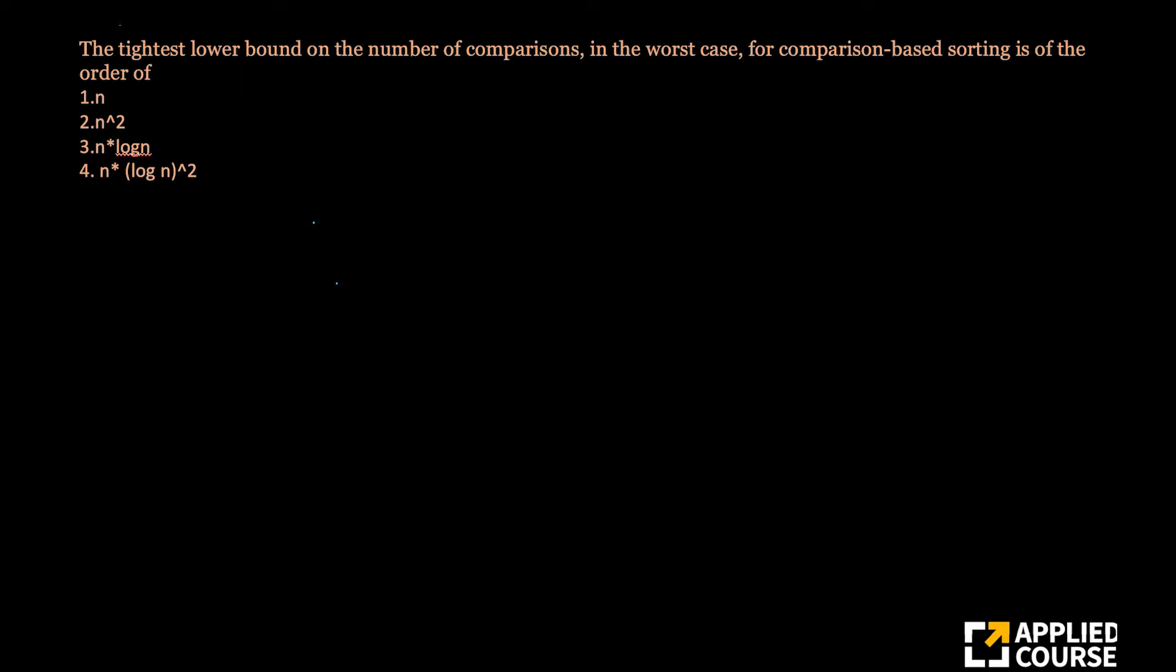This is another straightforward question. It asks for the tightest lower bound on the number of comparisons in the worst case for any comparison-based sorting algorithm. Is it order of n, n square, n log n, or n into log n square?